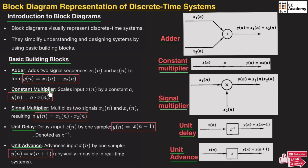Similarly, we have a constant multiplier. For example, if we have a sequence x(n) and a constant a, then a can be multiplied with x(n) to give the output y(n) = a·x(n). In the block diagram, the constant a is placed on the signal flow line and is multiplied with the input signal to obtain the output.